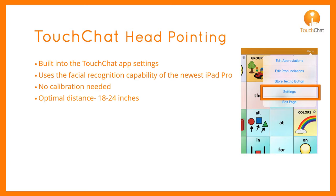However, many settings allow you to customize for the individual. We suggest changing one setting at a time. It may take several refinements to find the best combination of settings for the individual. For positioning, the optimal distance from the device is 18 to 24 inches.